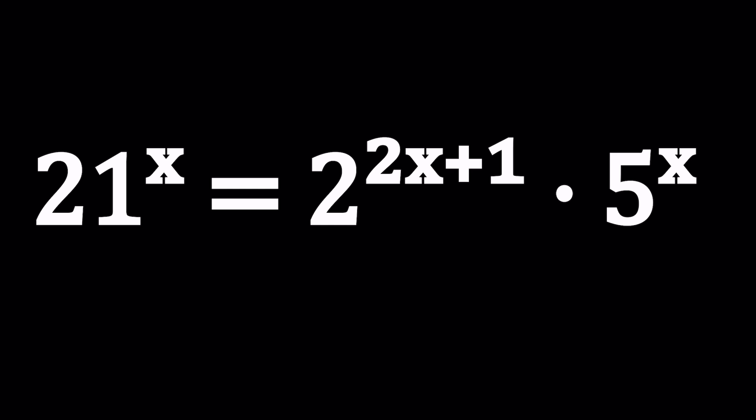We have, the issue here is we have different bases. Otherwise we could try to put these together. 21 is 3 times 7 which is the product of two primes and 2 and 5 are different primes. So they don't have anything in common. So what do you do in these kinds of cases? You kind of look for some easy solutions such as maybe you can set x equal to 0. That might work, not necessarily guaranteed, but it's worth a try.